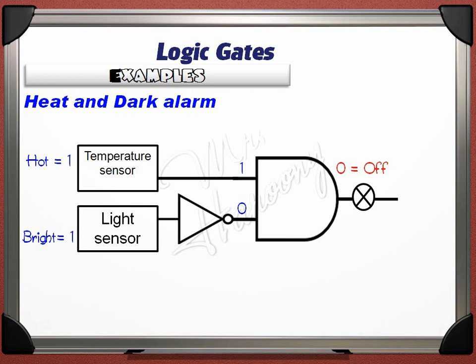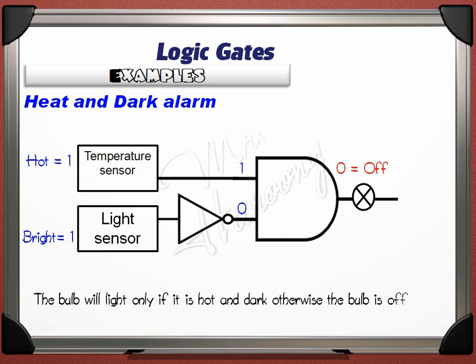From the four possibilities, the bulb lights only if it is hot and dark; otherwise the bulb is off.